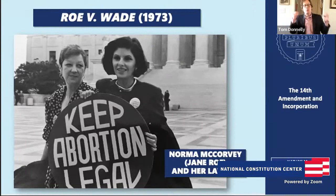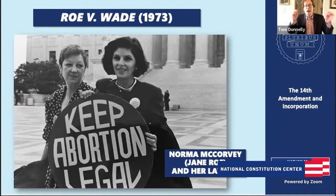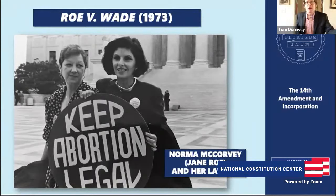The other big case is a Second Amendment case challenging a New York law about carrying guns outside the home. We may think of this as a Bill of Rights case, but because of incorporation and the 14th Amendment, it's really a 14th Amendment case — the only reason the Second Amendment can be used to attack a New York State law is because of the 14th Amendment and incorporation. So we see a big unenumerated rights case dealing with reproductive rights in Dobbs, and a big incorporation case dealing with the meaning of the Second Amendment in the New York gun case.